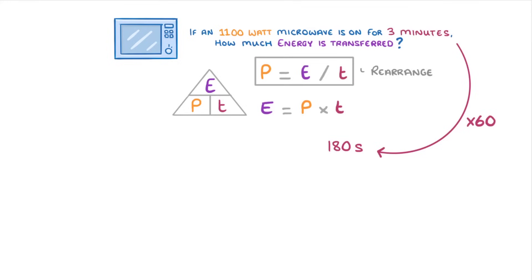And finally, we can substitute our values into the equation and do 1100 times 180 to give us 198,000 joules. And whenever we have a big number like this, we can convert it to kilojoules by dividing it by 1000. So we would have 198 kilojoules as our answer.